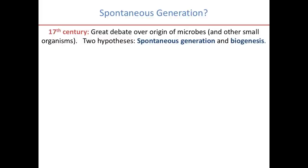Spontaneous generation is the hypothesis that small organisms can just arise out of nothing, whereas biogenesis is the hypothesis that life comes from life — that reproduction has to occur for life to take place. While it seems pretty obvious nowadays, back in the 1700s this was a very relevant and interesting question. Stop to think about how you would differentiate between spontaneous generation and biogenesis.